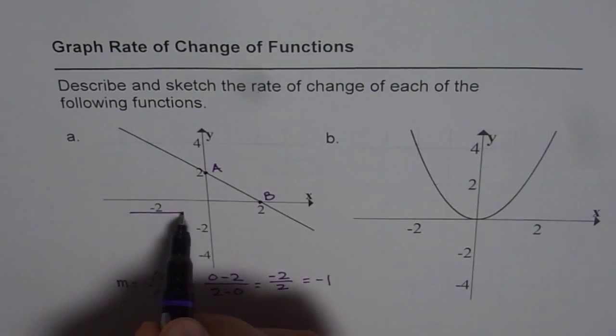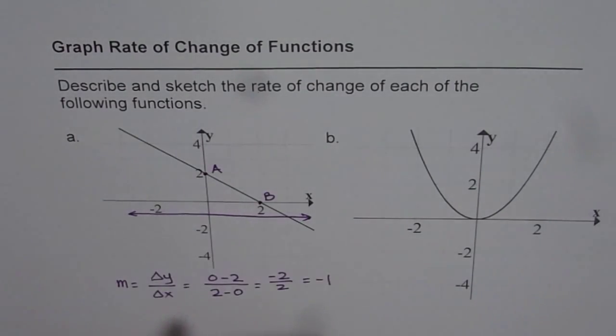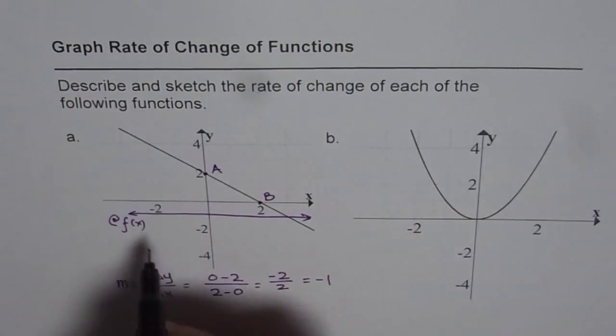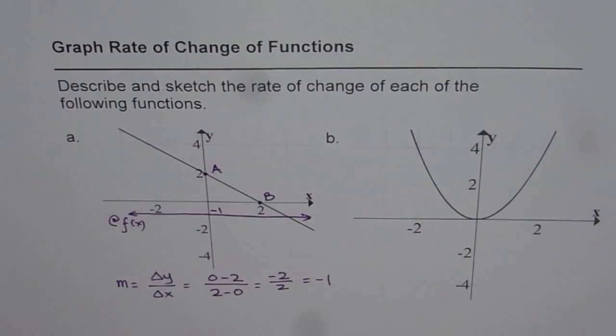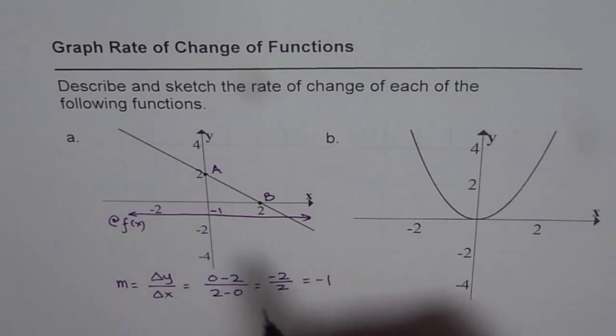So we can represent a line like this. That represents the rate of change of the function. This line represents the rate of change of the function f of x. That is how we can draw rate of change for a linear function. If you would have had a line which is rising, then we'll get a positive value.